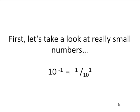First, let's take a look at what a really small number is. 10 to the negative 1 is just 1 in the numerator and 10 to the first power in the denominator. That pattern holds true if we have 10 to the negative 2 is just 1 in the numerator and 10 squared in the denominator.